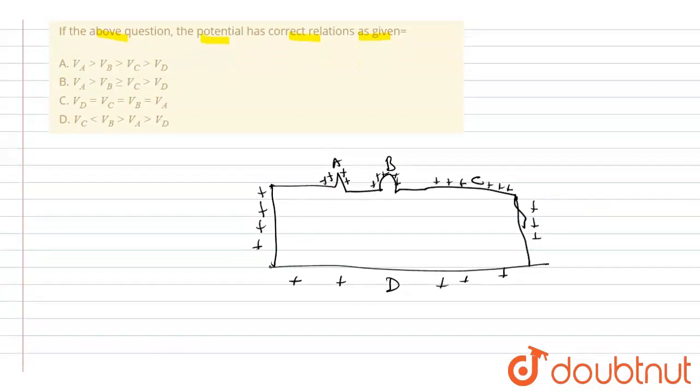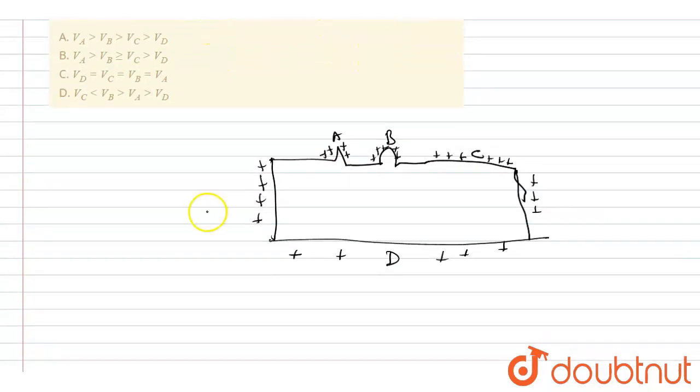And we know that surface of a conductor is equipotential surface. Equipotential surface, that means potential of every point is same. Okay, so we have already answered our question.